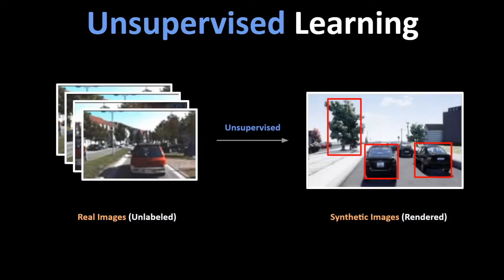First is the number and type of objects in a scene, like the number of cars, trees, buildings, people, etc. Second is the realistic spatial arrangements of these objects in a scene, so that when we arrange them next to each other it makes sense.